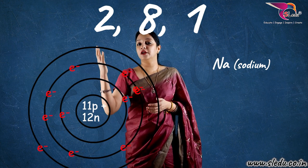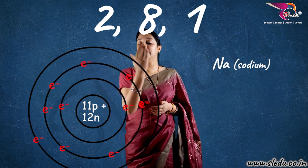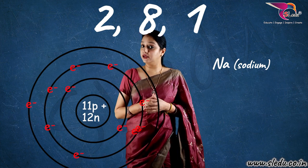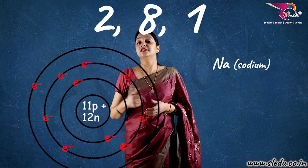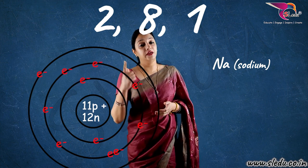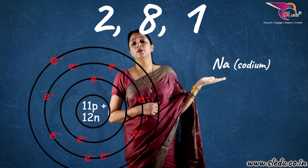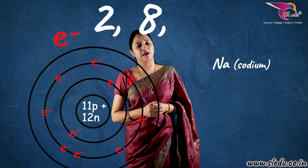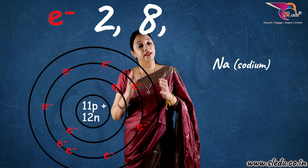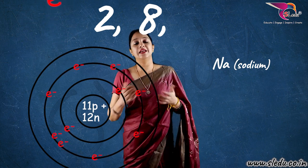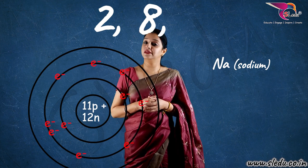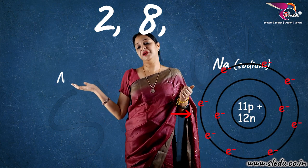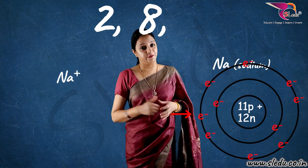So, as you can see the electronic configuration is 2, 8, 1. Its last shell has one electron. Now, with one electron, what will it do? Either it will gain seven electrons, or it will lose its one electron. So, what will sodium prefer? Sodium will lose its one electron. Now, because it gave away one electron, its electrons decreased and its proton count is more. So, sodium now becomes Na positive.